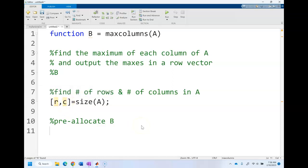We're going to pre-allocate B. We're going to say that B is equal to NaN times ones, and it's going to have one row, c columns. So this is a one by c array where it has the same number of columns as A.